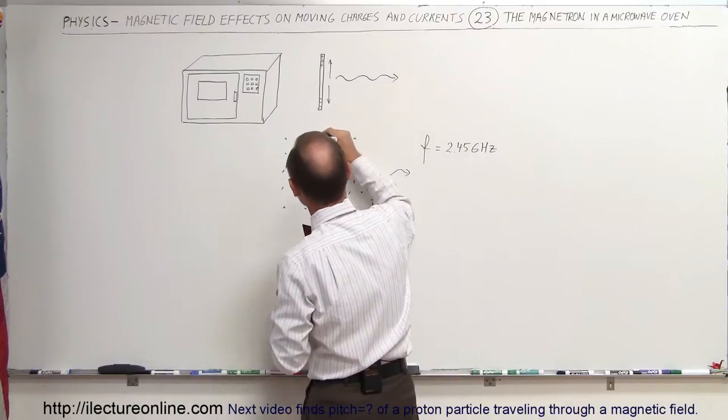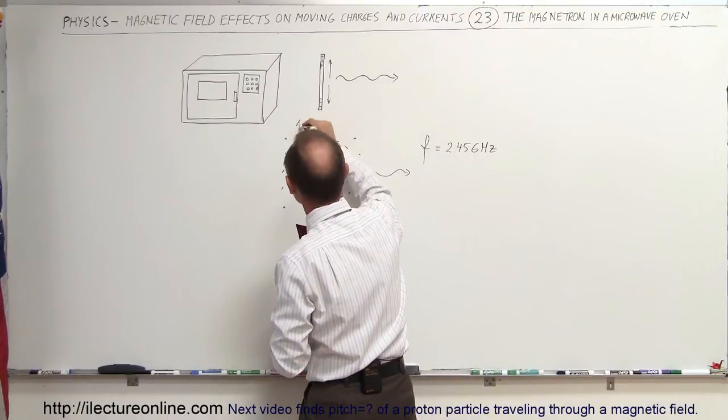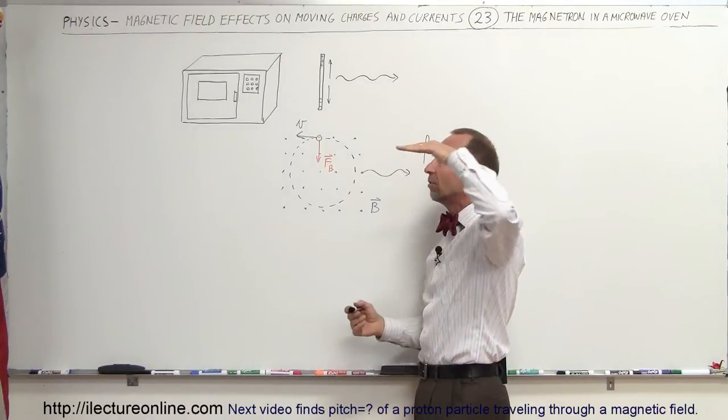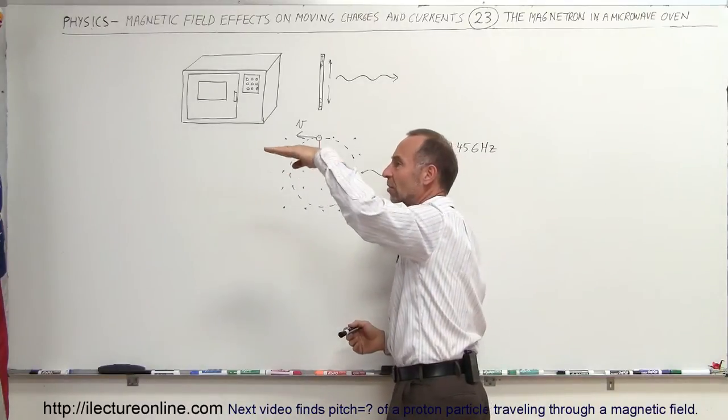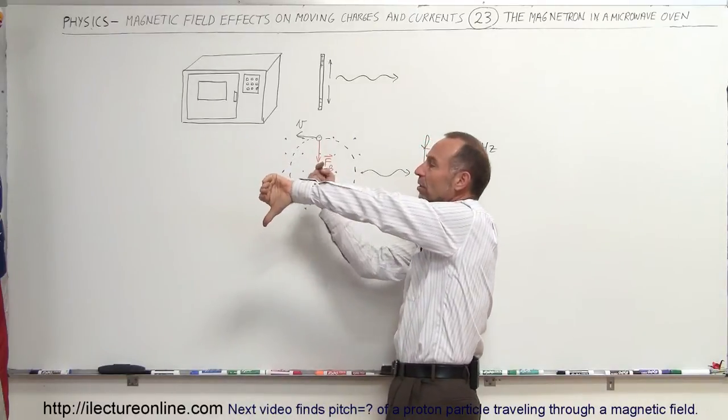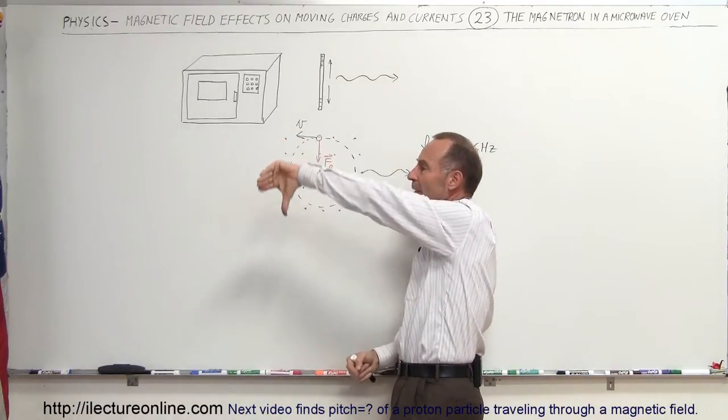So let's say we have an electron moving in this direction, right there. So velocity is in this direction. This is electron, negative charge. Use our left hand. Put your left hand and the fingers in the direction of the motion of the electron. And turn your hand to turn your fingers in the direction of the magnetic field coming out of the board. And the force will be downward.